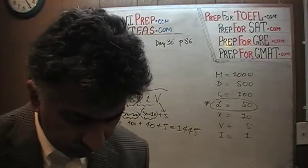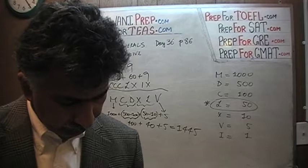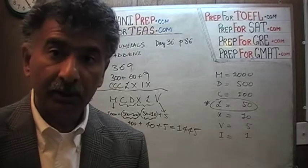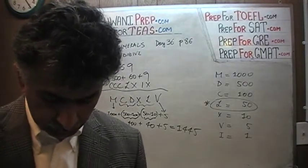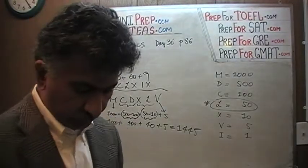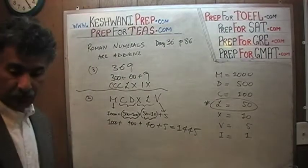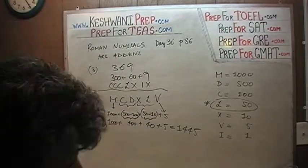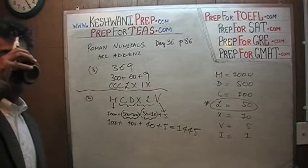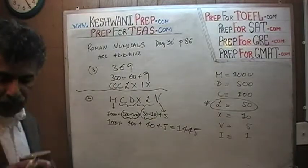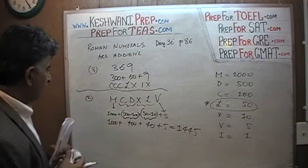Those were the three problems given in the book. We are going to do a few more — about a dozen total, so nine more additional ones. We'll keep erasing to make room since I don't want to erase the symbols. Let's do the next one.